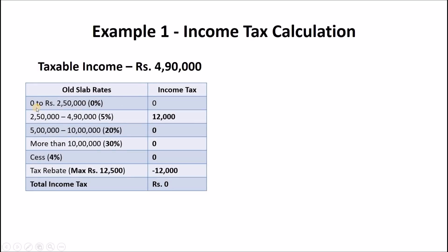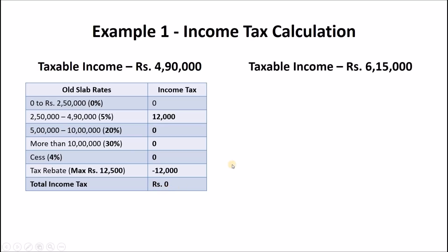Under the old tax slab rates: no tax on income between Rs 0 to Rs 2.5 lakhs; 5% tax on income between Rs 2.5 lakhs to Rs 4,90,000 which equals Rs 12,000. The 20% and 30% tax slabs are not applicable in this example. Since taxable income is below Rs 5 lakhs, we get a maximum tax rebate of Rs 12,500 under Section 87A. Hence, the income tax of Rs 12,000 is cancelled by the tax rebate of Rs 12,500, making your effective income tax Rs 0.